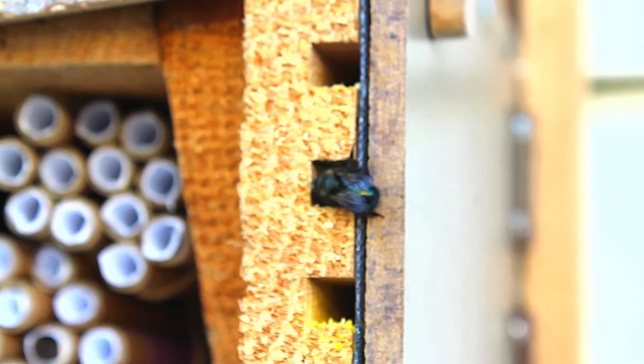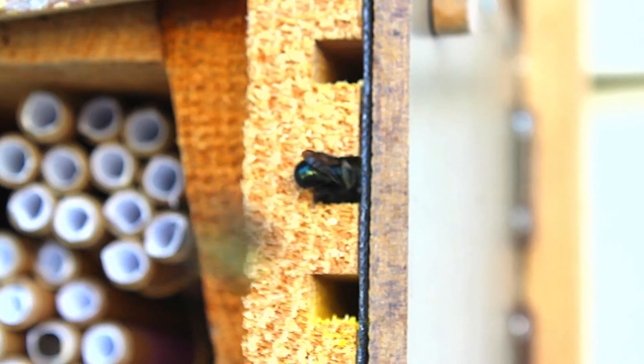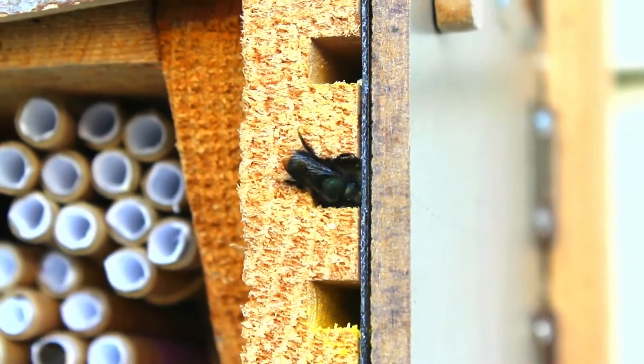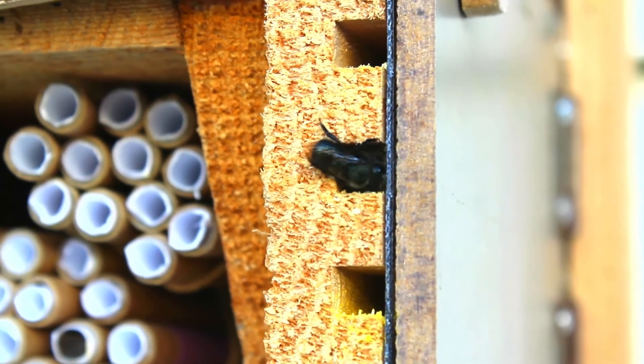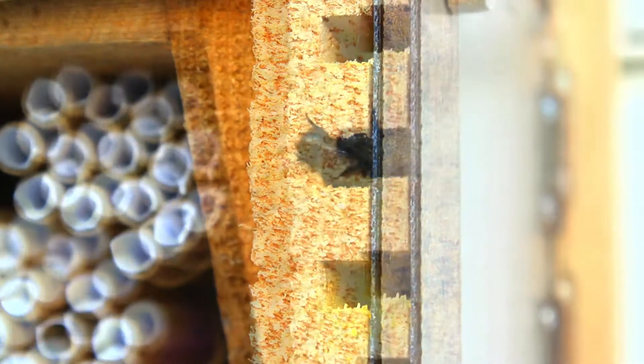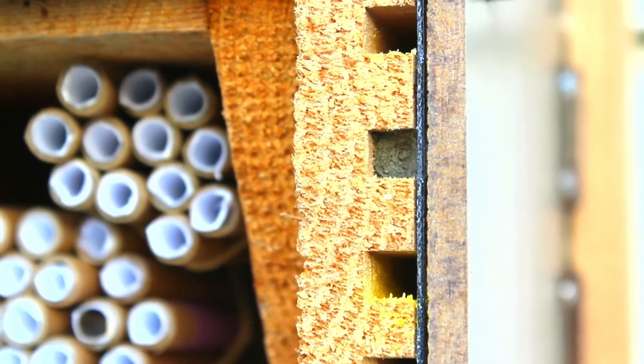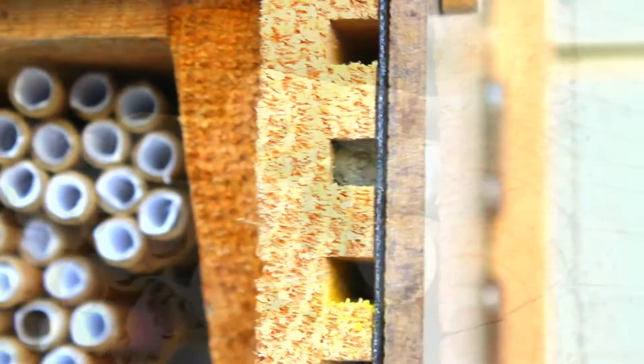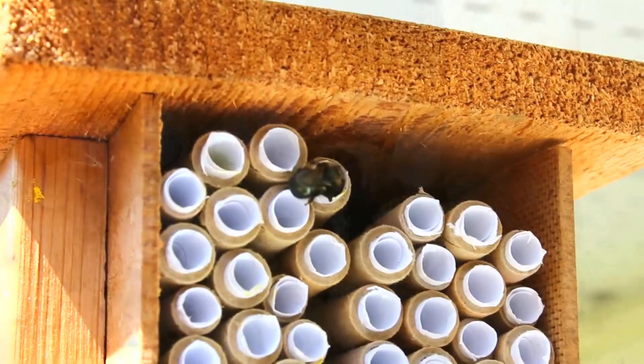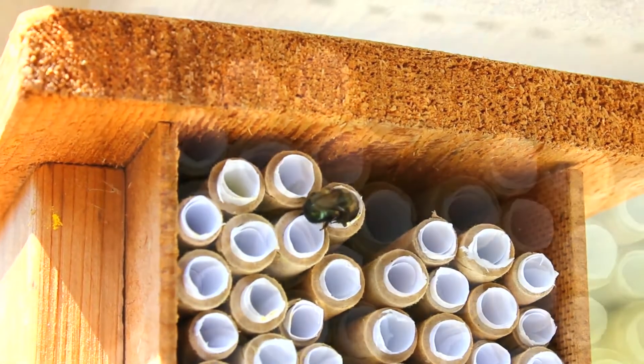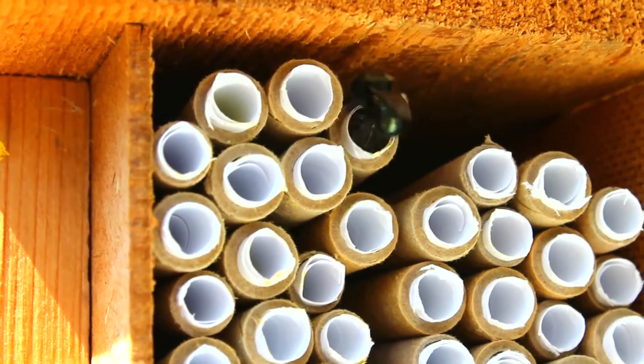She'll then source out some local muddy clay and build a tiny partition wall, sealing the egg and pollen bundle inside. With this first cell complete, the bee will begin the entire process over, starting a new pollen ball at the base of the wall she just completed. She'll do this over and over again until the tube is full of little cells, each containing an egg and pollen bundle. After the last cell is complete, the bee will build a second outer wall to add an extra layer of protection to the tube entrance.